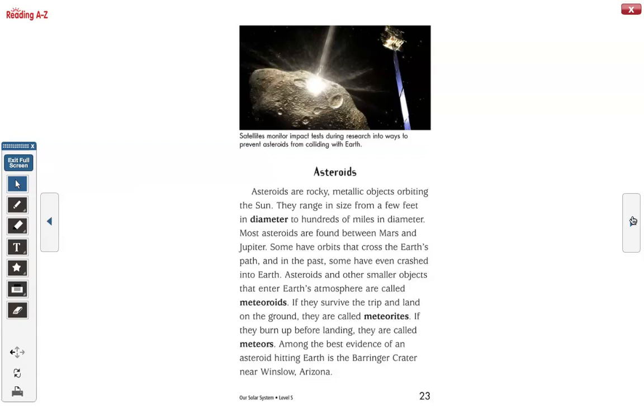Satellites monitor impact tests during research into ways to prevent asteroids from colliding with Earth. Asteroids. Asteroids are rocky, metallic objects orbiting the sun. They range in size from a few feet in diameter to hundreds of miles in diameter. Most asteroids are found between Mars and Jupiter. Some have orbits that cross the Earth's path. In the past, some have even crashed into Earth. Asteroids and smaller objects that enter Earth's atmosphere are called meteoroids. If they survive the trip and land on the ground, they are called meteorites.